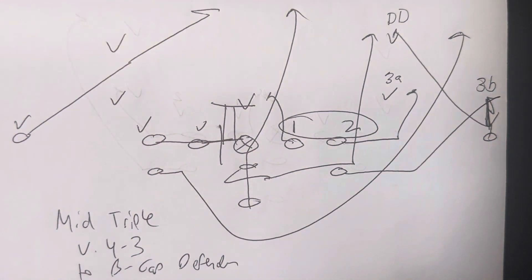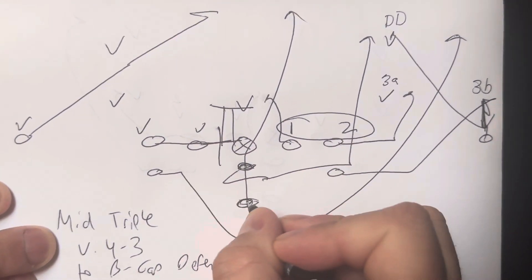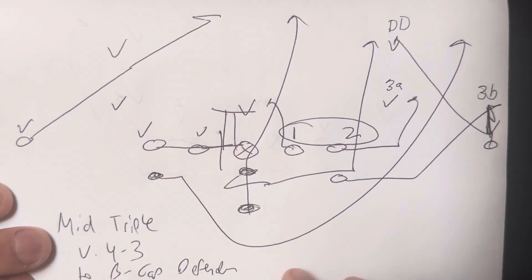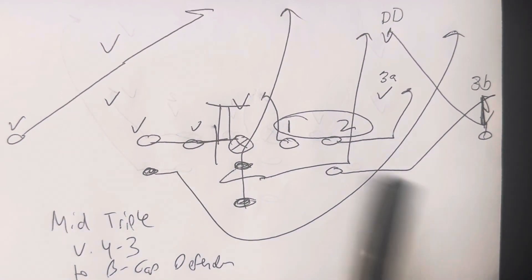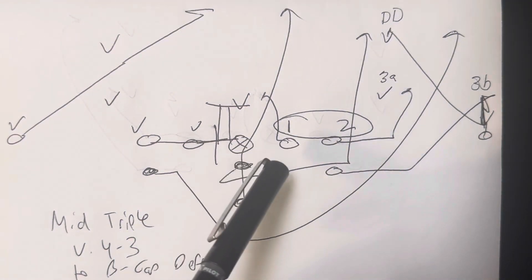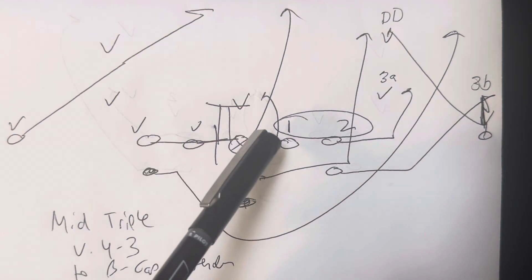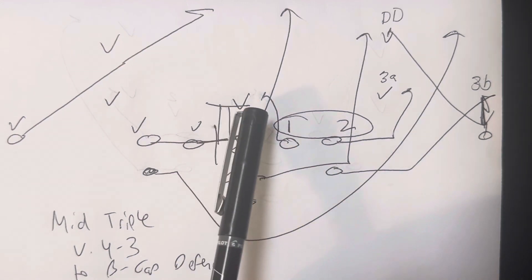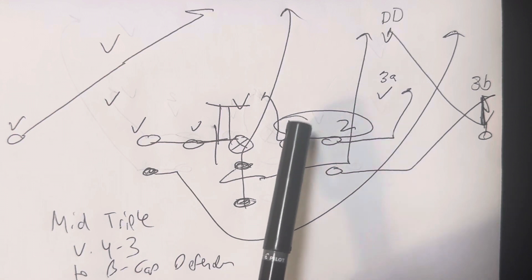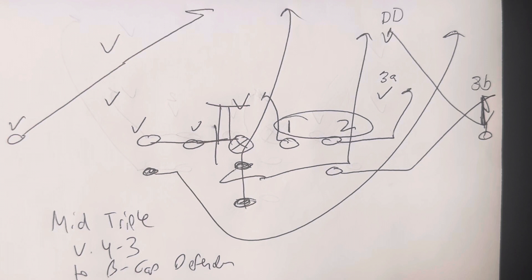Midline triple option is designed so that you don't have to block the B and C-gap defenders. As soon as the guard veers inside and this player on him stays outside, that's a B-gap defender. It's the quarterback's job to cancel him and the guy next to him with the football. When the guard veers inside to the mic, you've got those two guys that are unblocked, but they can't make the tackle because the quarterback cancels them with the football.